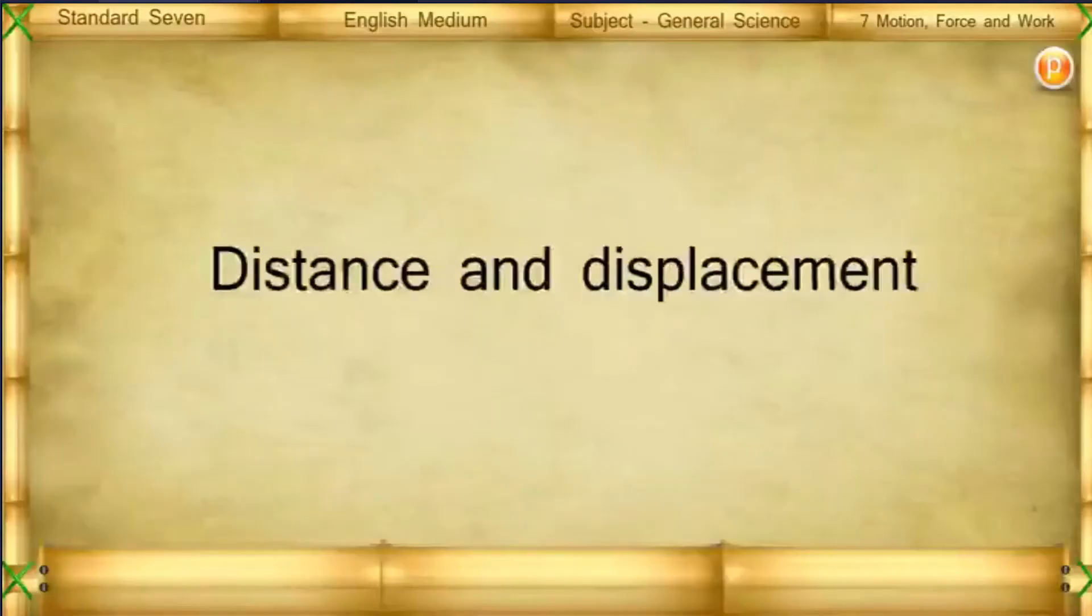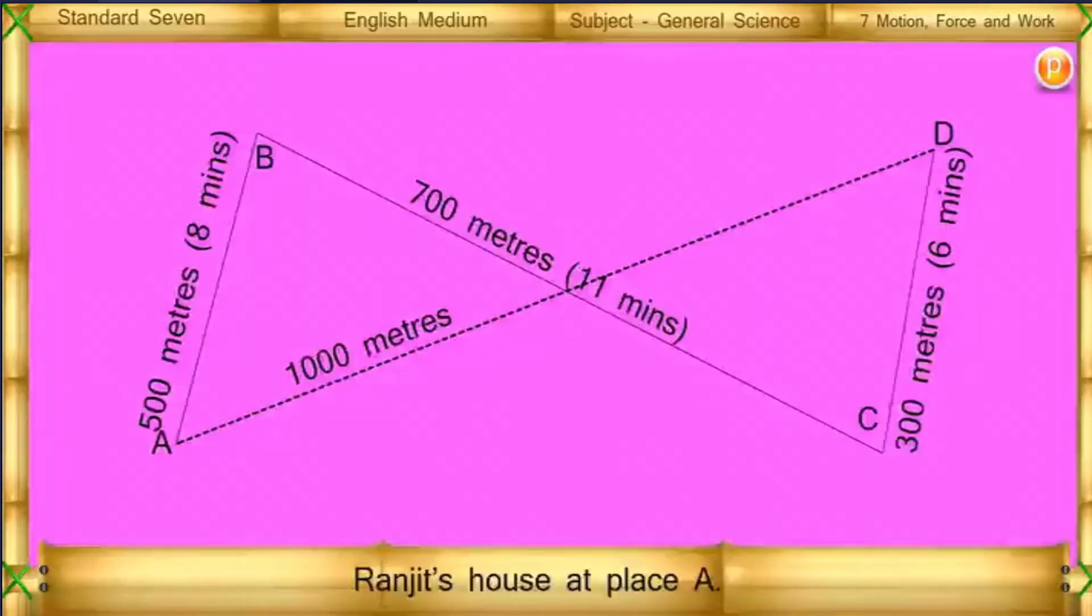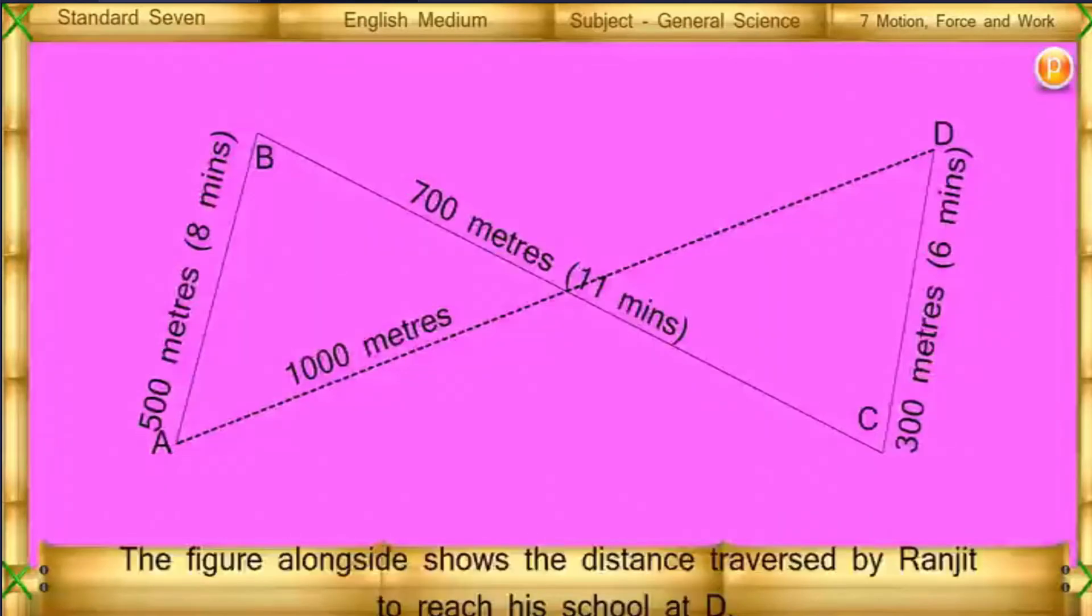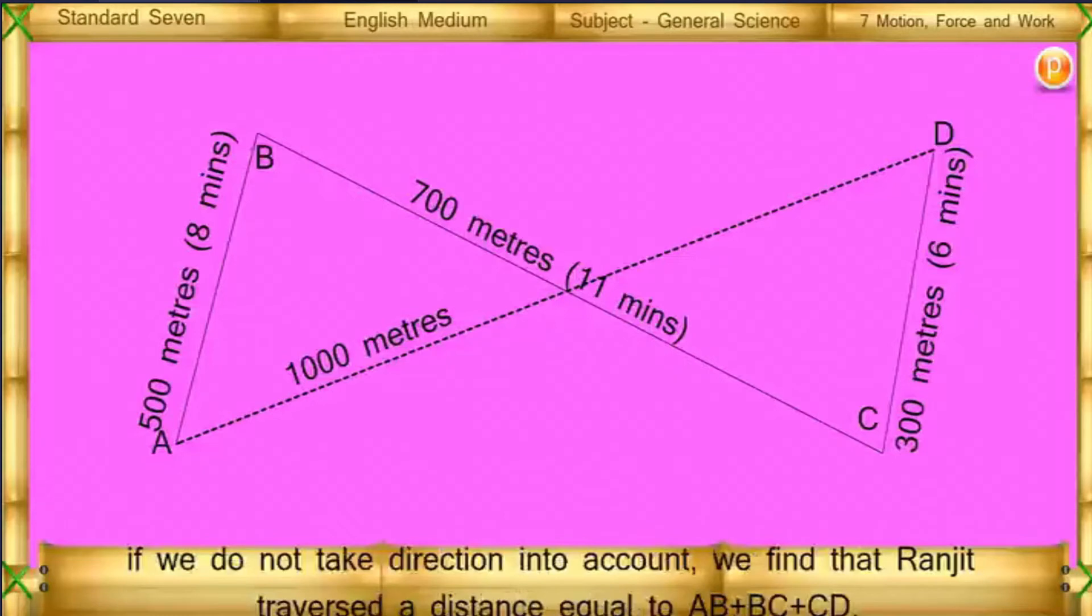Distance and Displacement. Ranjit's house is at place A. The figure alongside shows the distance traversed by Ranjit to reach his school at B. If we do not take directions into account, we find that Ranjit traversed a distance equal to AB plus BC plus CD.